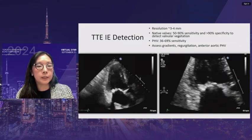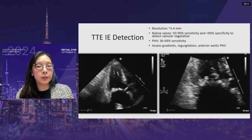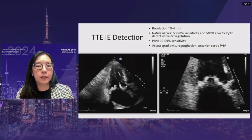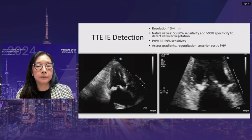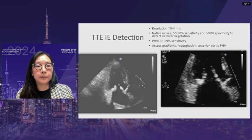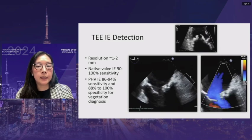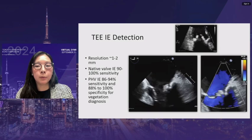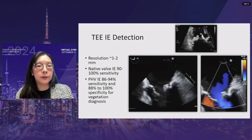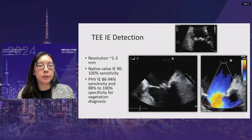Looking at transthoracic images: an apical three-chamber view and zoomed view show a patient with baseline calcification including mitral annular calcification, and on the posterior mitral valve leaflet there is a hint of a mobile mass flickering around. Moving to the TEE of the same patient, there is a heterogeneously dense mass with intimate mobility and not a lot of mitral regurgitation. TEE is very useful for detection of valvular masses, with resolution of about one to two millimeters — much better than TTE.